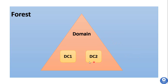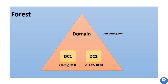If you have two Domain Controllers for the domain computing.com — meaning two Windows Servers with Active Directory installed — you can keep two FSMO roles on DC1 and transfer the remaining three FSMO roles to DC2. It depends on your requirements; you can move those FSMO roles as needed.